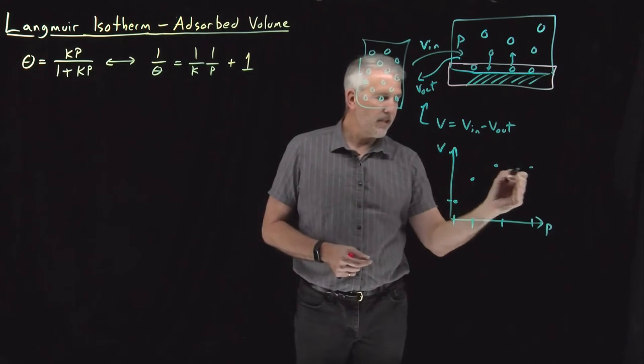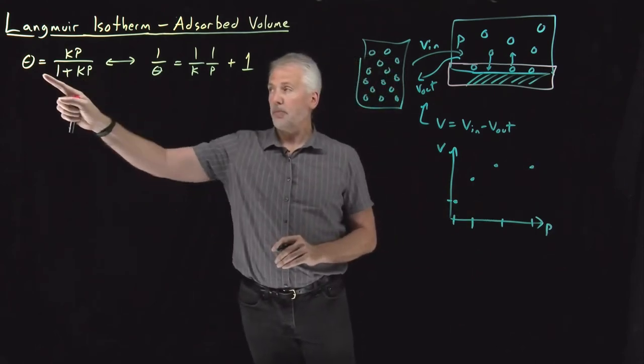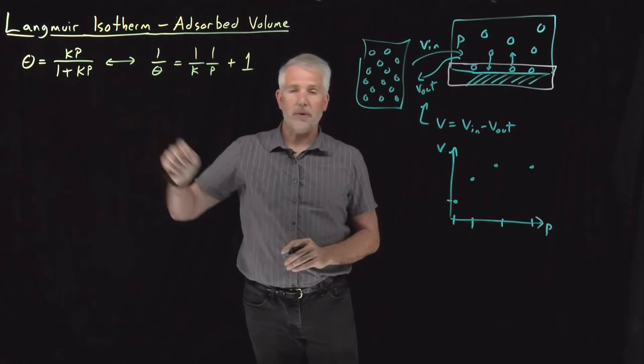This is a graph of the Langmuir isotherm. I'm just plotting volume as a function of pressure rather than surface coverage.